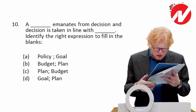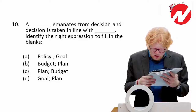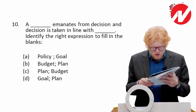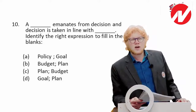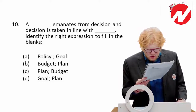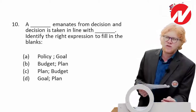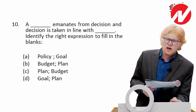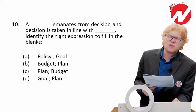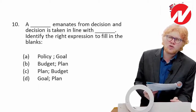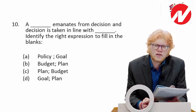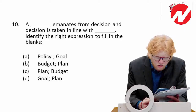Next: dash enumerates from decisions, and decisions are taken in line with dash — identify the right expression. Policies are enumerated from decisions, and decisions are taken in line with goals. So ultimately the end objective is achieving a certain goal by making a decision and converting it into policy.